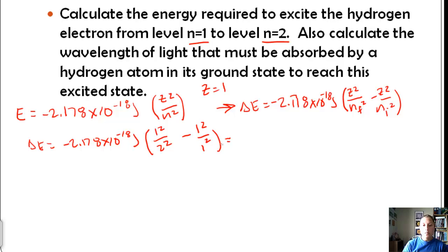And so if we plug all that in, we end up with 1.216 times 10 to the negative 18 joules. So that's the amount of energy to excite the hydrogen electron.